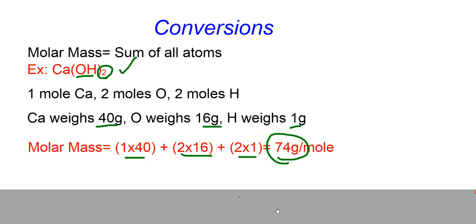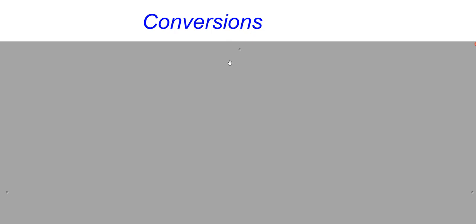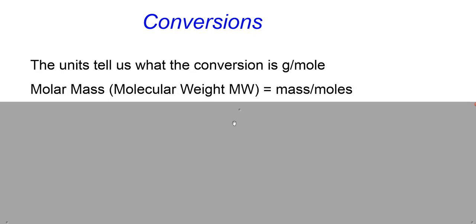And that should add up to a molar mass for calcium hydroxide of 74 grams for every one mole. The general formula that we generated should be that the molar mass equals the mass divided by the moles.